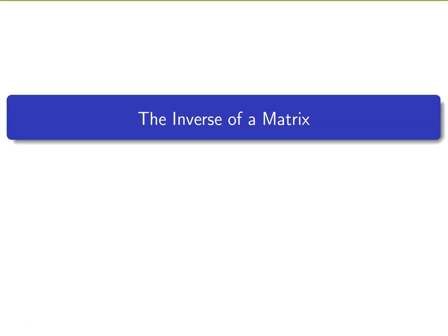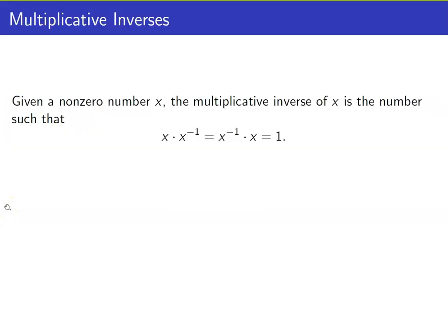In this lesson, we are going to talk about the inverse of a matrix. Let us recall the definition of a multiplicative inverse for real numbers. Given a non-zero number x, the multiplicative inverse of x is the number such that when you multiply that number with its multiplicative inverse, you get the multiplicative identity, which is equal to 1. In the world of matrices, a similar definition also exists.